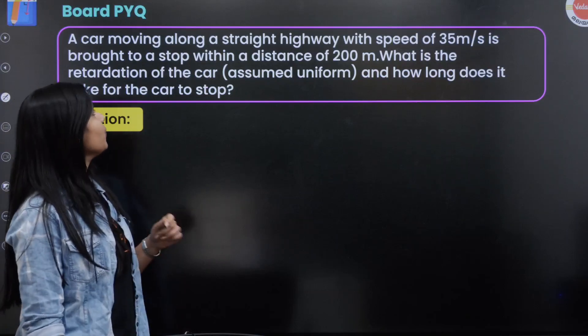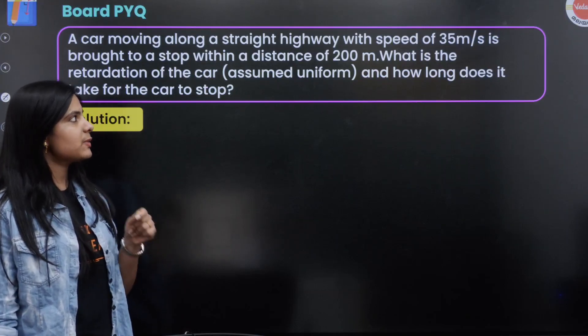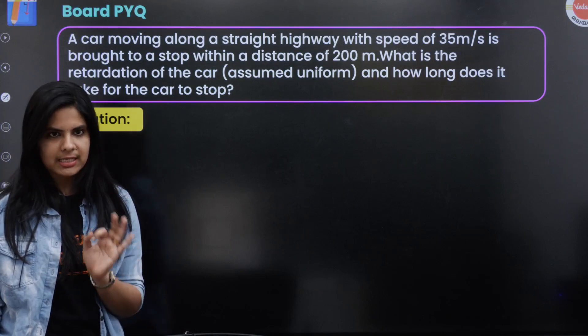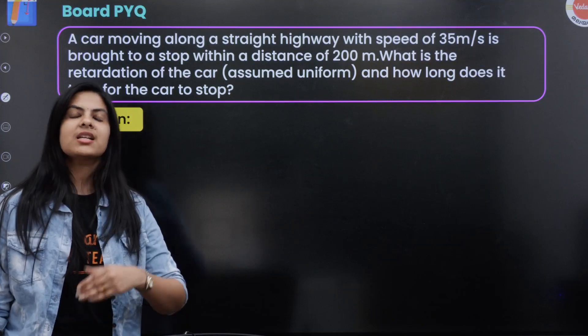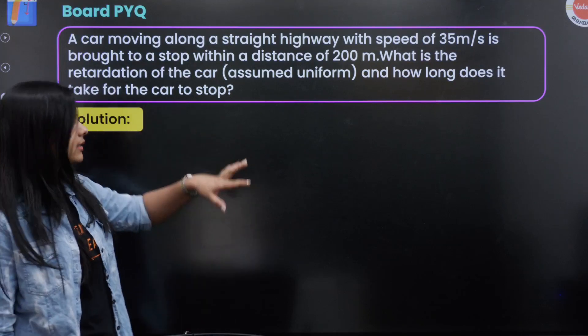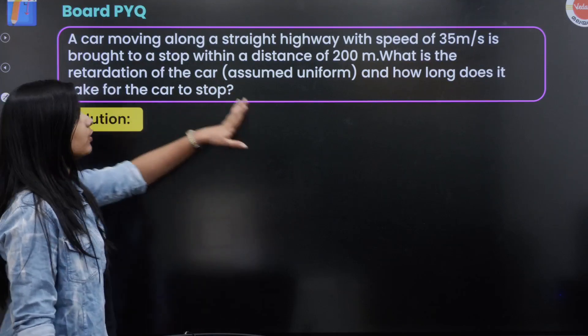A car moving along a straight highway with speed of 35 meters per second is brought to a stop within a distance of 200 meters. What is the retardation of the car and how long does it take for the car to stop?